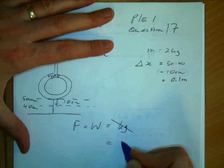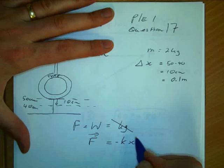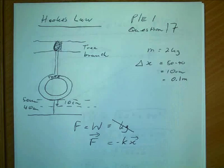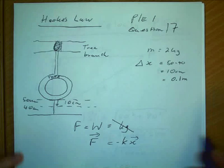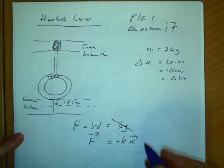If we wanted the direction of the force that opposes the extension, but we don't, we just want the constant. So we can rearrange. Don't worry about k being negative or positive. We rearrange it and we get mg.